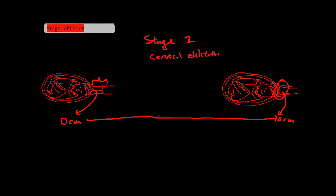So this first stage happens in two parts, the latent and the active phase, which are divided by how far the cervix has dilated. So the latent phase is from zero centimeters until about four centimeters. You can just remember five to make it easier. And the second part is from the four or five centimeters to 10 centimeters.